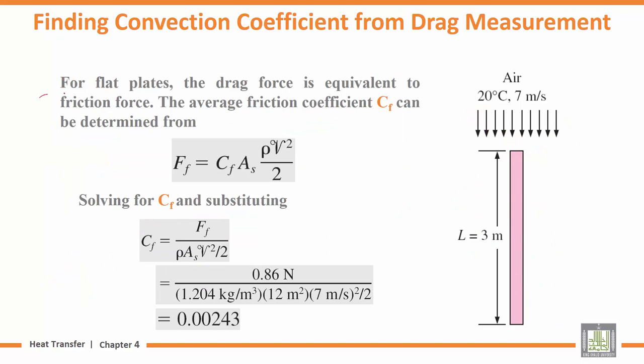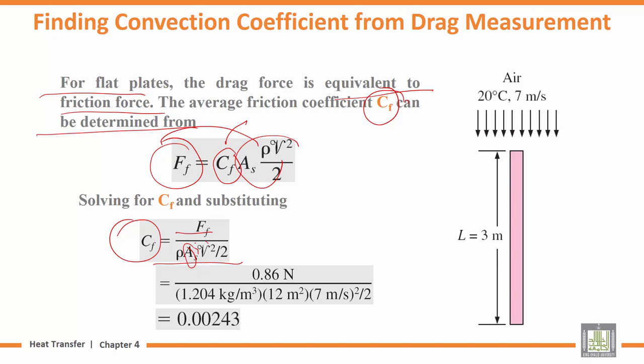For a flat plate, the drag force is equivalent to the friction force. The average friction coefficient CF can be determined from the drag force. Rearranging, CF = F / (rho × As × V²/2), where As is the surface area we calculated, V is the velocity, rho is the density, and F is the drag force that was measured. Thus CF = 0.00243.